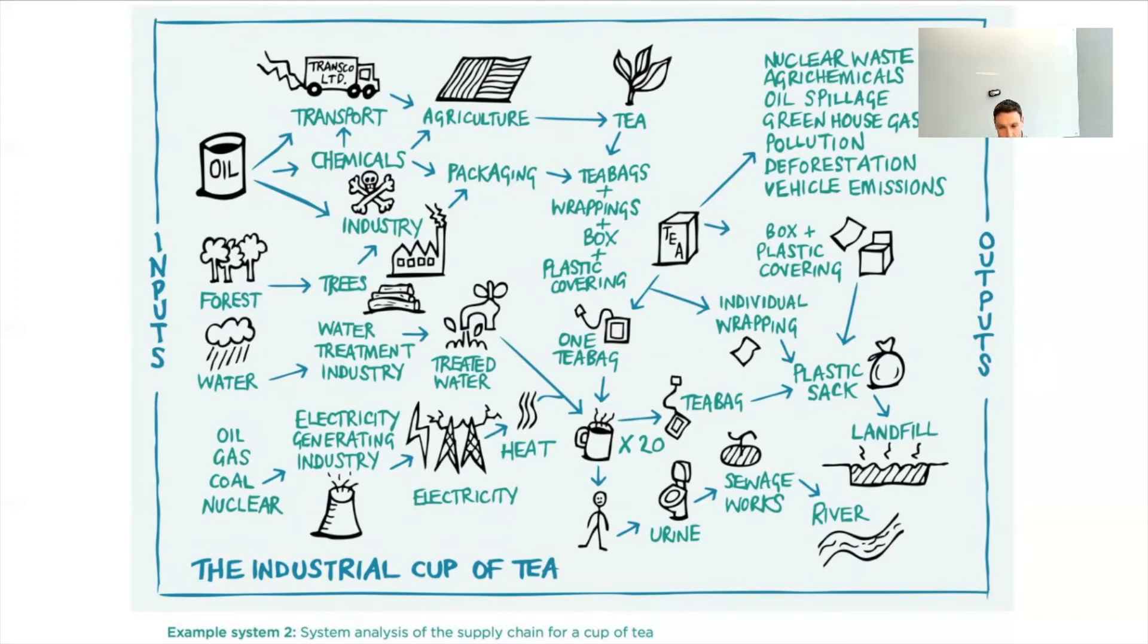Tea is related to tea bags which is going to this cup of tea, and so forth. That's another example of a map of a complex system - all the parts and their interrelationships. That's what we're doing when we're doing systems mapping.